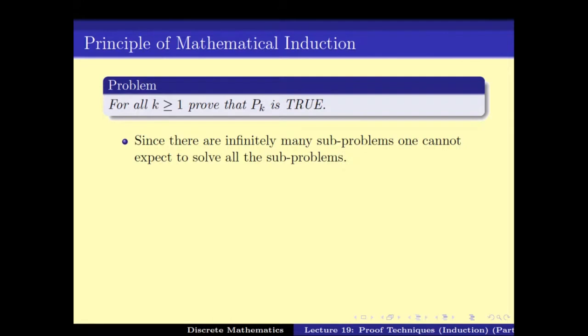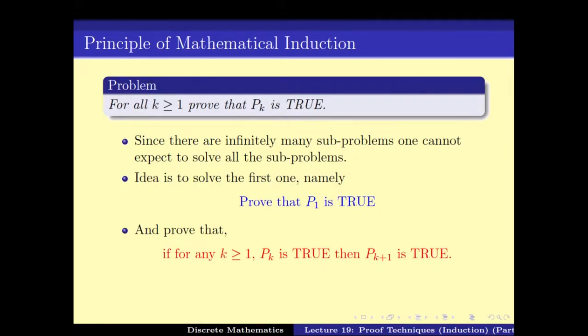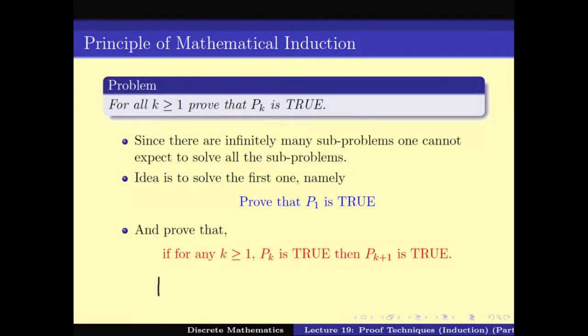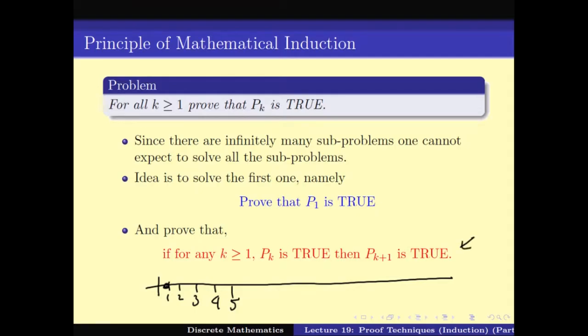So we have to come up with some cleverer way of solving the infinite cases in one go. The idea is: first prove P1 is true, and assuming that you can prove Pk is true, prove that Pk+1 is true. So it is like writing down all the natural numbers 1, 2, 3, 4, 5 and so on on a number line. First we prove P1 is true, and this red line says that if I know Pk is true then I know Pk+1 is true.